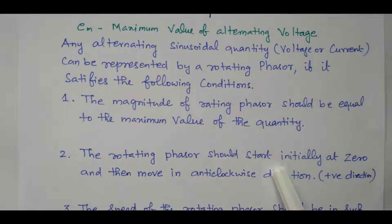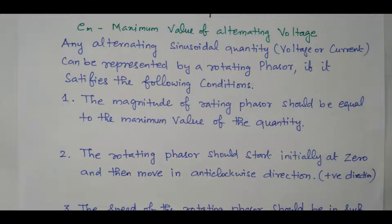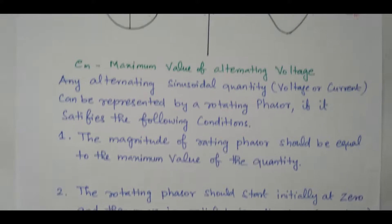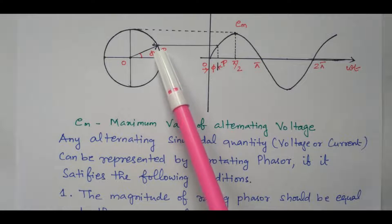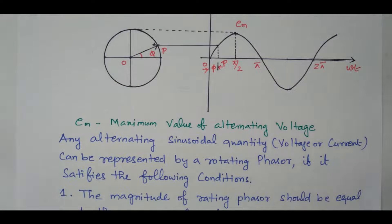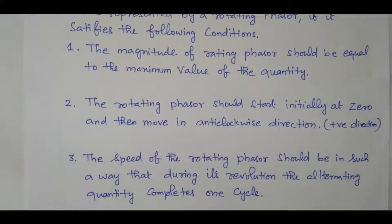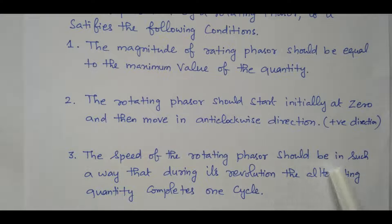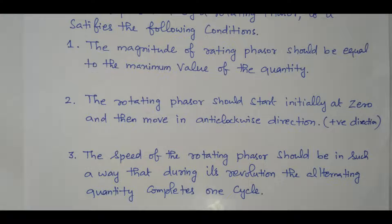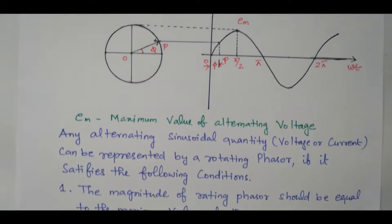The second condition: the rotating phasor should start initially at 0 and then move in the anti-clockwise direction. Here also we are moving in the anti-clockwise direction, so the second condition is also satisfied. The third condition: the speed of the rotating phasor should be such that during one full revolution, the alternating quantity completes one cycle. While completing one full circle with the rotating phasor, one complete cycle — positive and negative half — is completed. So the third condition is also satisfied.